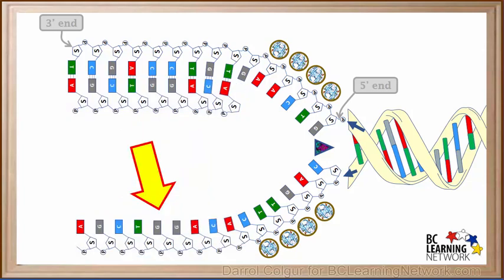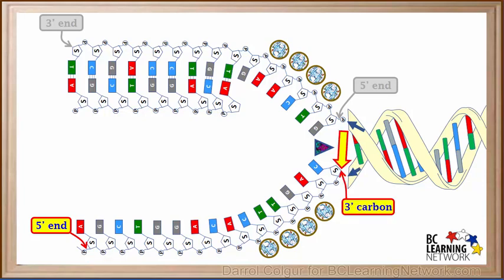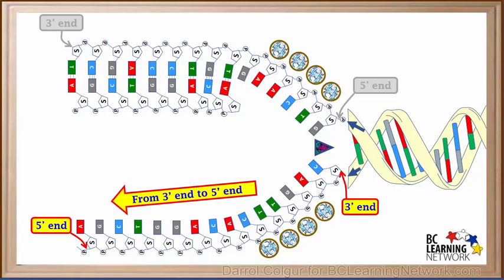Now we'll concentrate on the bottom strand. Here's the 5' carbon of the sugar on the left end of this strand. So this is called the 5' end of this strand. And here's the 3' carbon atom in the sugar on the right end of this section of the strand. So this is the 3' end of this section. Recall that when nucleotides are added to an exposed section of a strand, they add from the 3' end to the 5' end of the original strand.